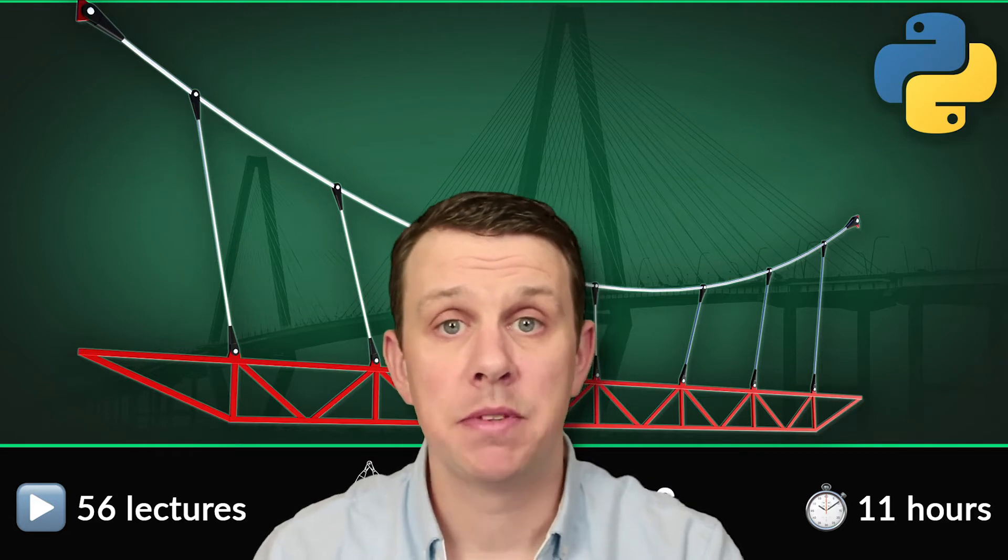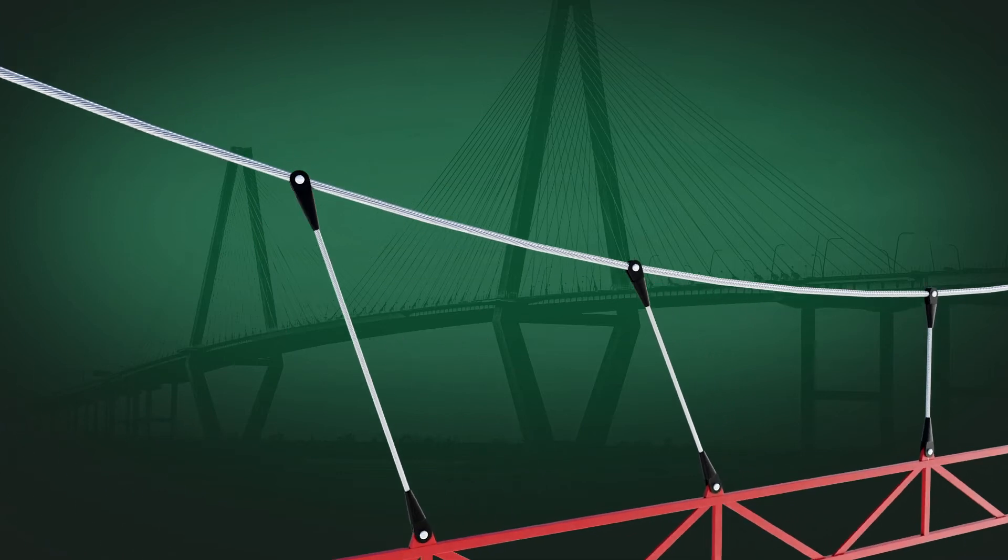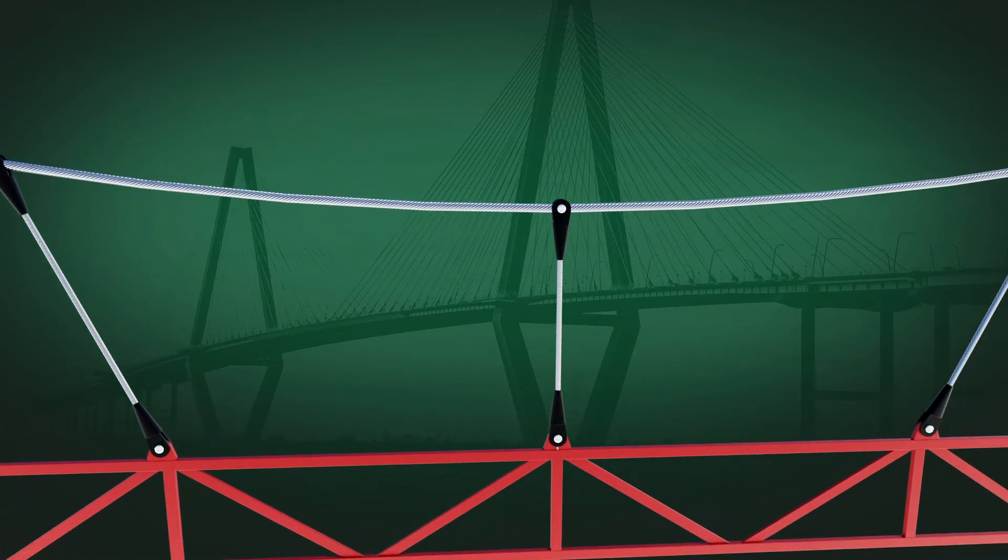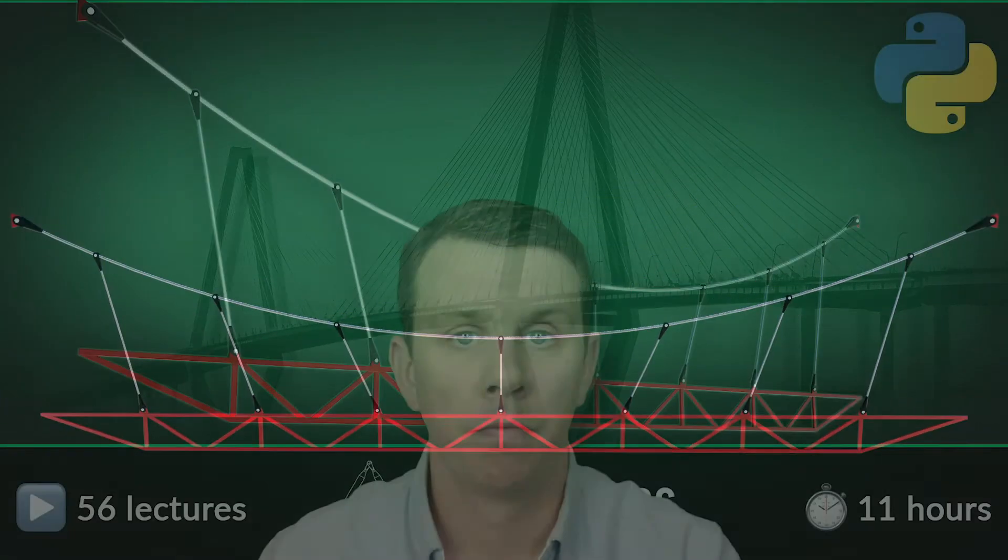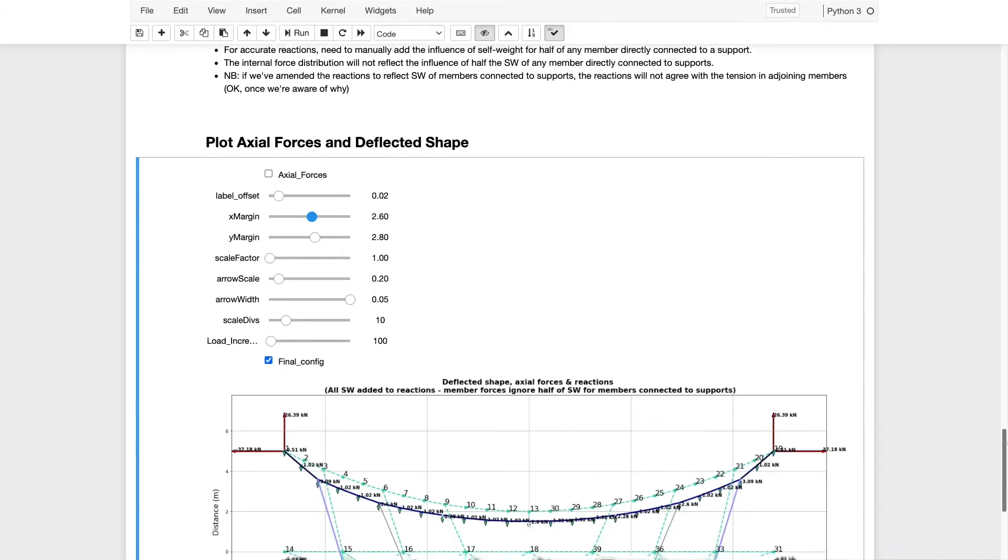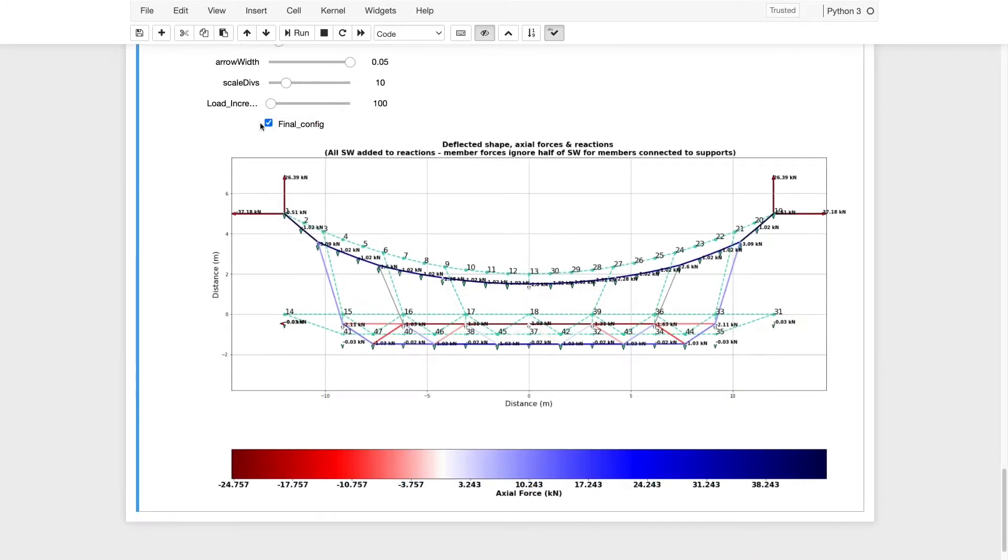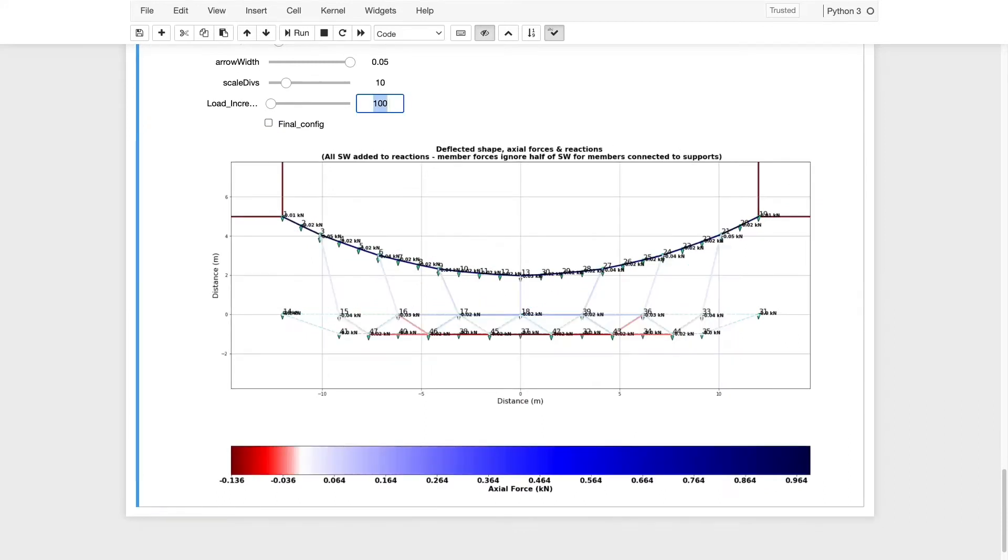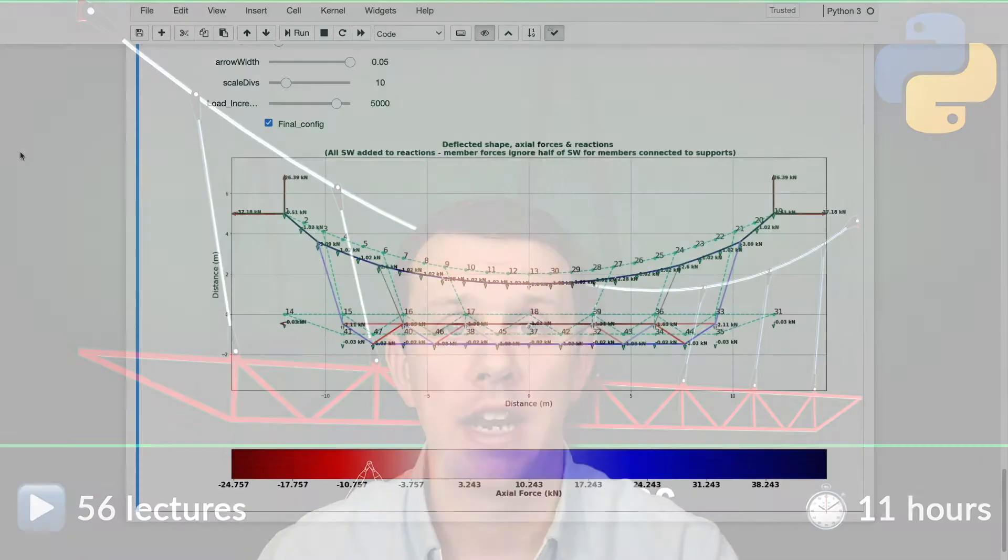In this course we're going to place particular emphasis on cable structures as these are a classic example of structures that undergo significant changes in geometry under loading which leads to non-linear structural behavior. By the time you finish this course you'll have a really good understanding of geometric non-linearity. You'll understand why it's an important behavior to capture and when you can and cannot ignore it. You'll also have built for yourself an iterative solver that can tackle this complex structural behavior.